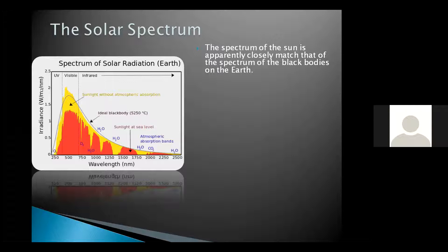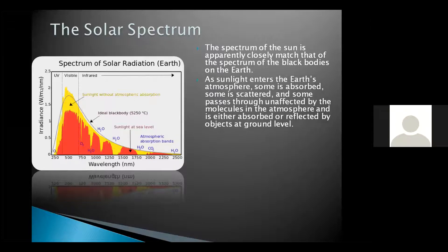The main difference is in the short wavelength region, in the visible region, where the atmosphere absorbs and scatters a lot of radiation. In the figure you can see further dips in the curves due to absorption by the atmosphere. As sunlight enters the earth's atmosphere, some is absorbed, some is scattered, and some passes through unaffected, and is either absorbed or reflected by objects at ground level.